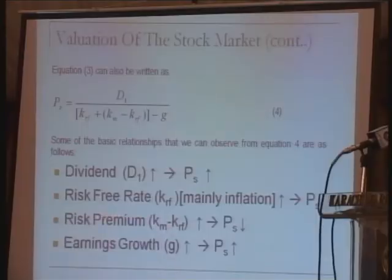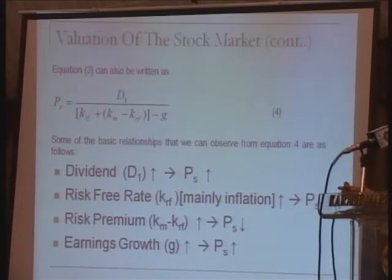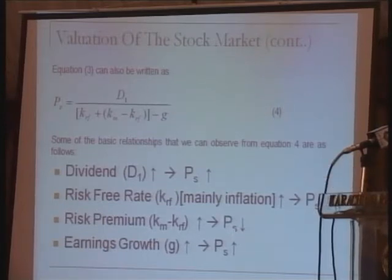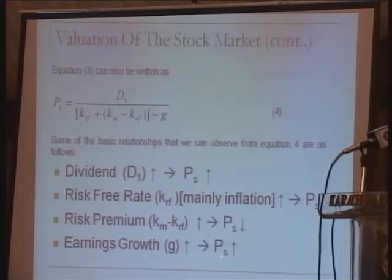The risk premium goes up — as it has over the last couple of years with the bomb blasts and all of that — we see the stock market going down. And as corporate earnings grow, we see the stock market going up. So these are the basic relationships to keep in mind when looking at the stock market, but this model applies to any investment.